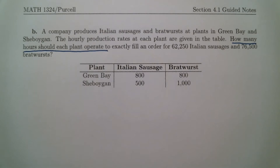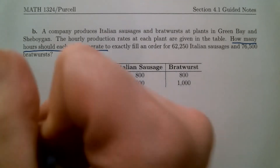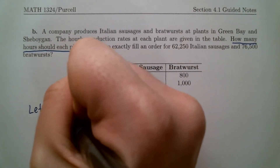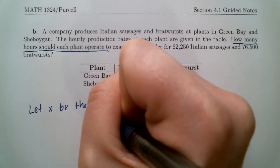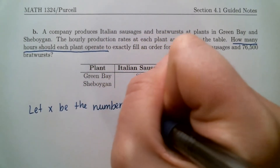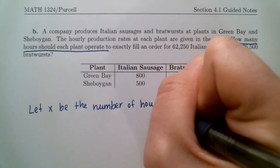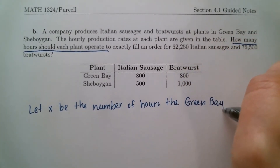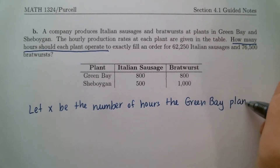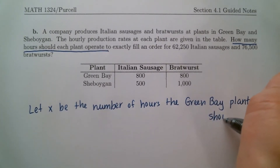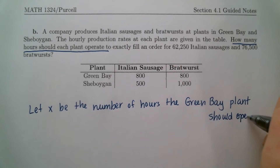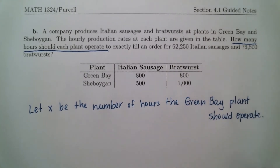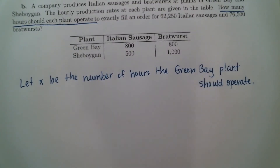There's the Green Bay plant and the Sheboygan plant. We need to know how many hours each plant needs to operate. So we're going to let X be the number of hours the Green Bay plant should operate, and Y be the number of hours the Sheboygan plant should operate.